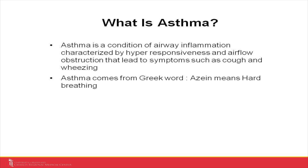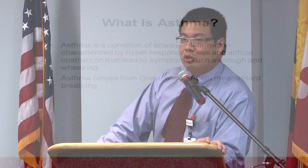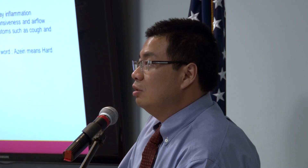What is asthma? Asthma is a condition of airway inflammation characterized by hyper-responsiveness and airflow obstruction that leads to symptoms such as cough and wheezing. Asthma comes from a Greek word meaning hard breathing. Inflammation is not infection. Inflammation is a reaction of the body that something is going on and needs to be addressed. Infection causes inflammation, but inflammation is not infection — they're two different things.